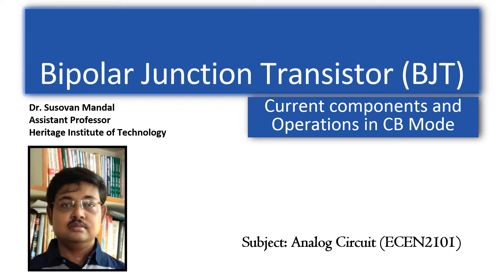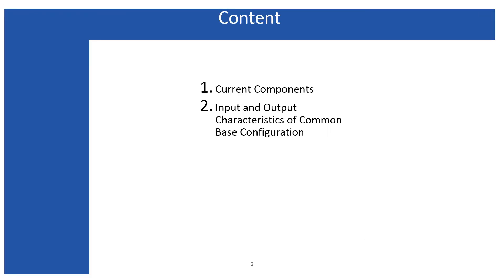The Bipolar Junction Transistor, or BJT, is mainly made of two types of materials: N-type and P-type semiconductor. The current within a BJT is due to both types of carriers — both the electron and the hole — which is why it is called Bipolar. There exists a junction between the N-type and P-type semiconductor. It is a transistor because it transfers resistance and offers amplification.